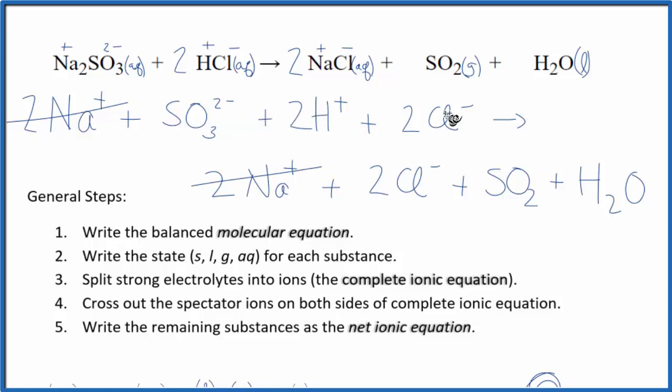SO3 minus H plus. I have 2 chloride ions in the reactants, 2 chloride ions in the product. Cross them out. But what's left, that's the net ionic equation. Right here. This is our net ionic equation.